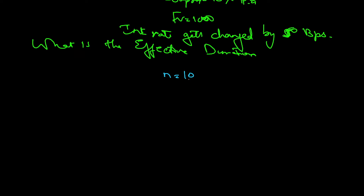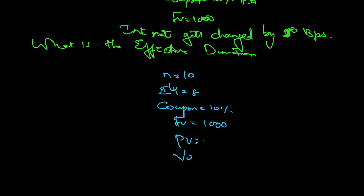Given: N is 10, IY is 8%, coupon is 10%, future value is 1000. Finding the present value through the calculator: 10 N, 8 IY, payment 100 (which is 10% of 1000), future value 1000, compute present value — this gives 1134.20. So V-zero is 1134.20.